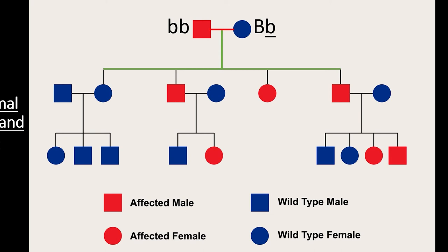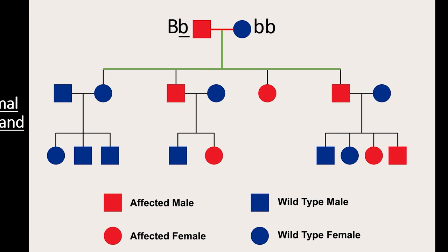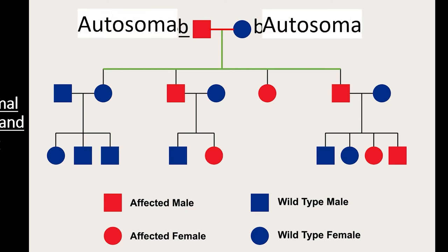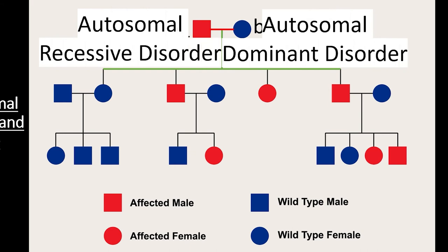However, this could also be an autosomal dominant disorder, since similar ratios would be seen if the first affected male was heterozygous. Therefore, this pedigree could show either autosomal recessive or autosomal dominant patterns of inheritance. Our final clue — the fact that the trait is seen in every generation — suggests this pedigree shows a dominant trait, but more testing or a larger pedigree would be needed to confirm this.